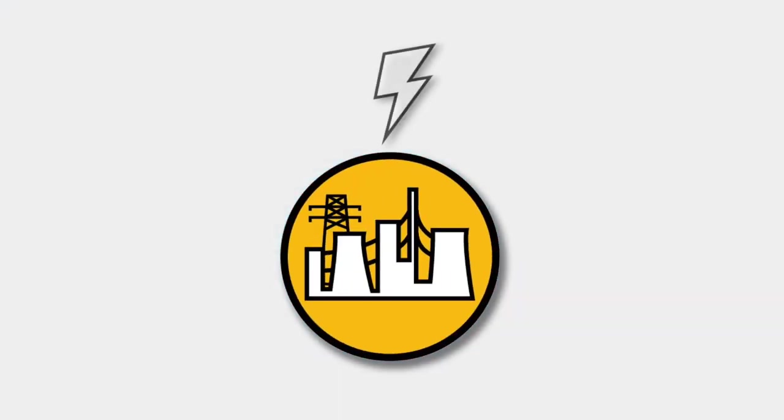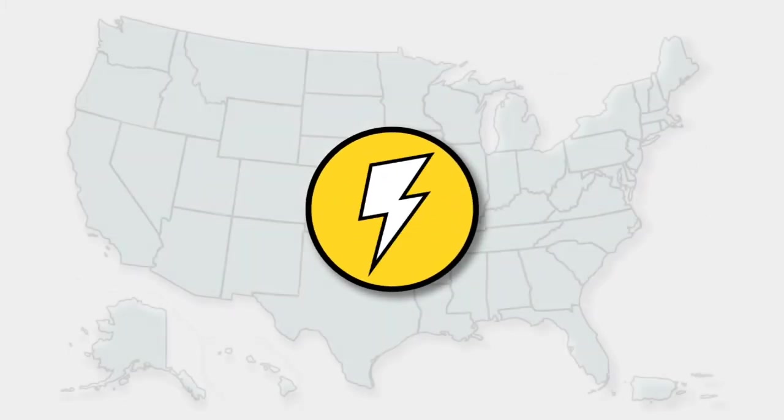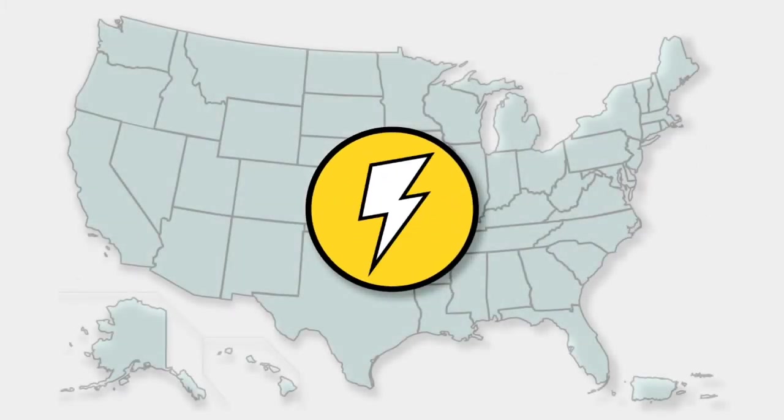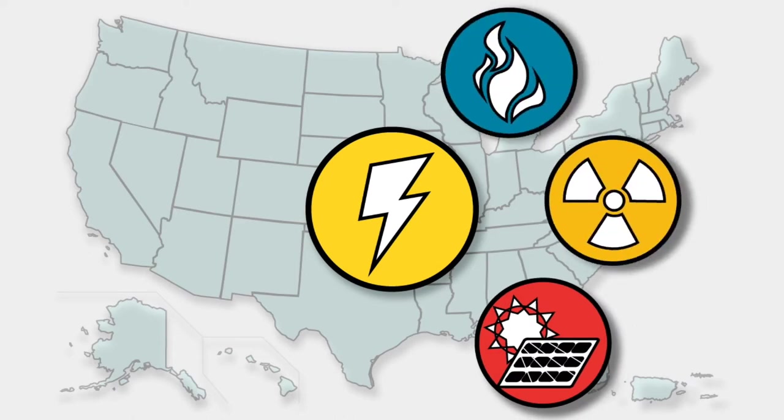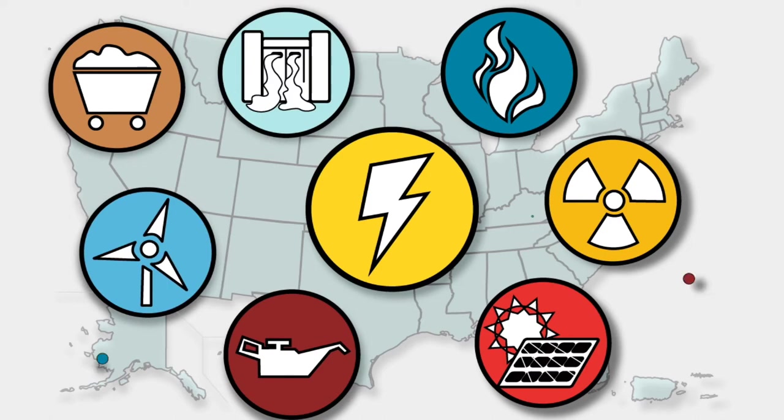Your utility may make electricity or buy it from someone else who does. Electricity in America is generated from sun, nuclear, natural gas, coal, oil, wind, water, and many other sources.